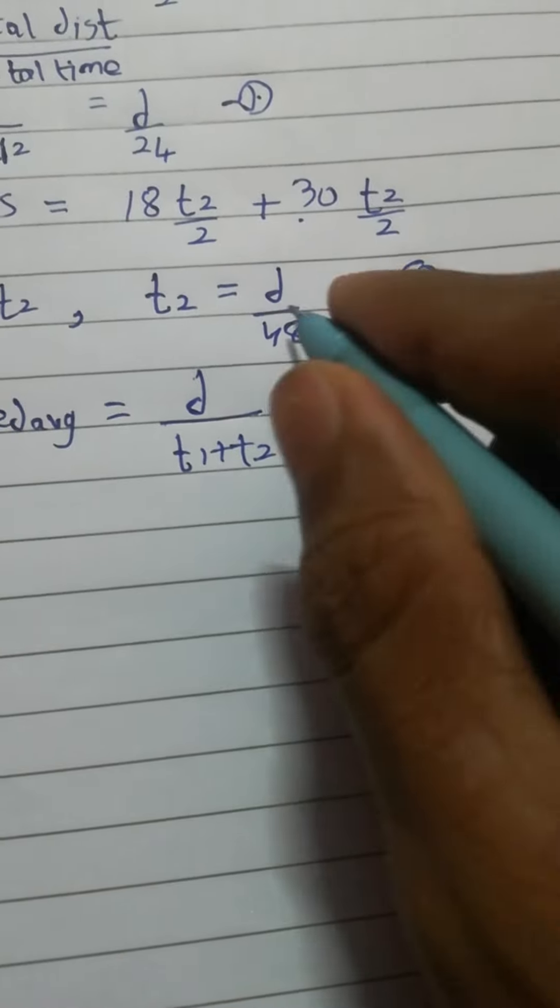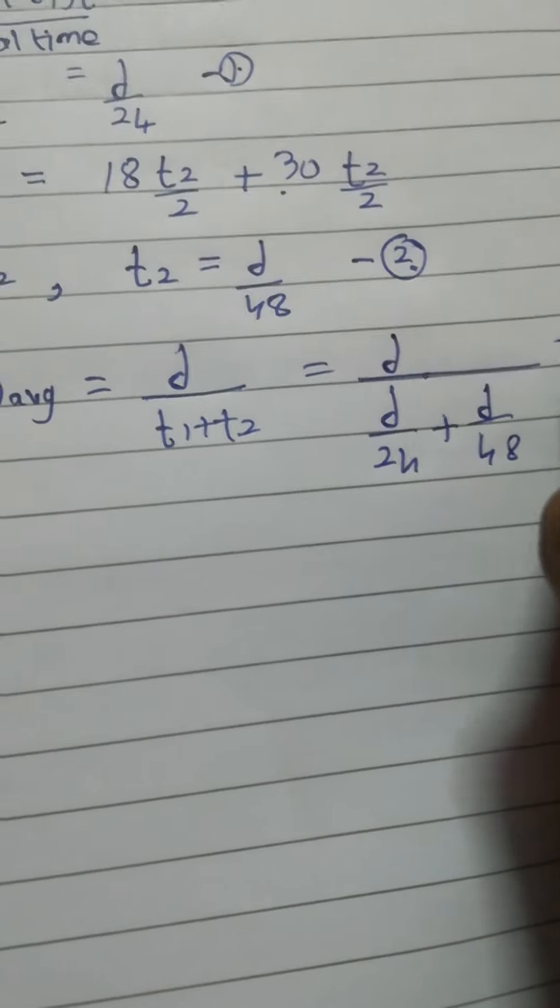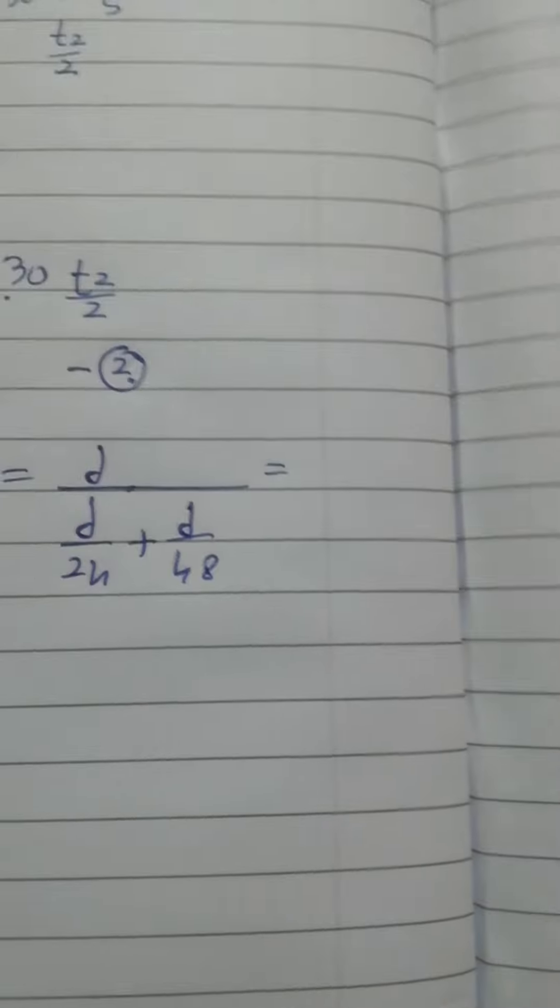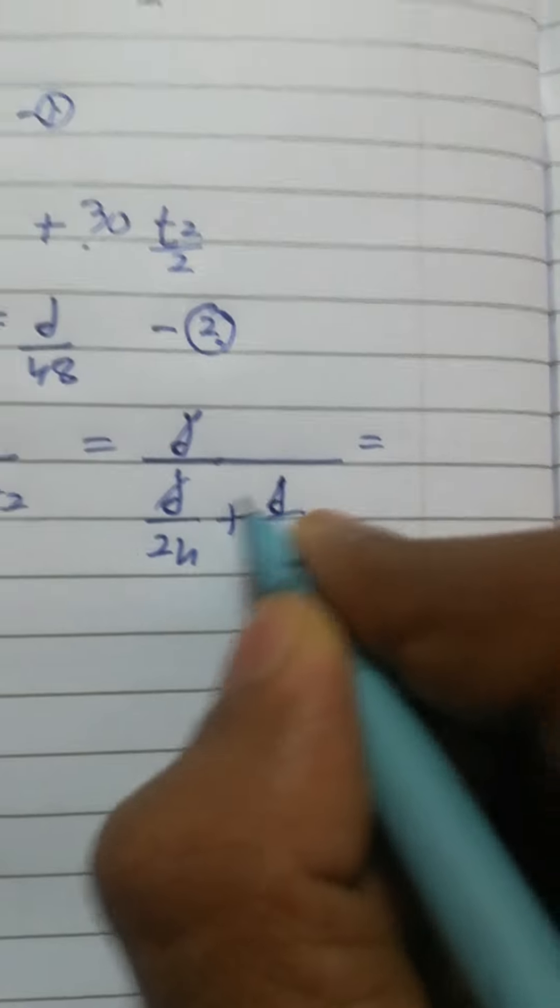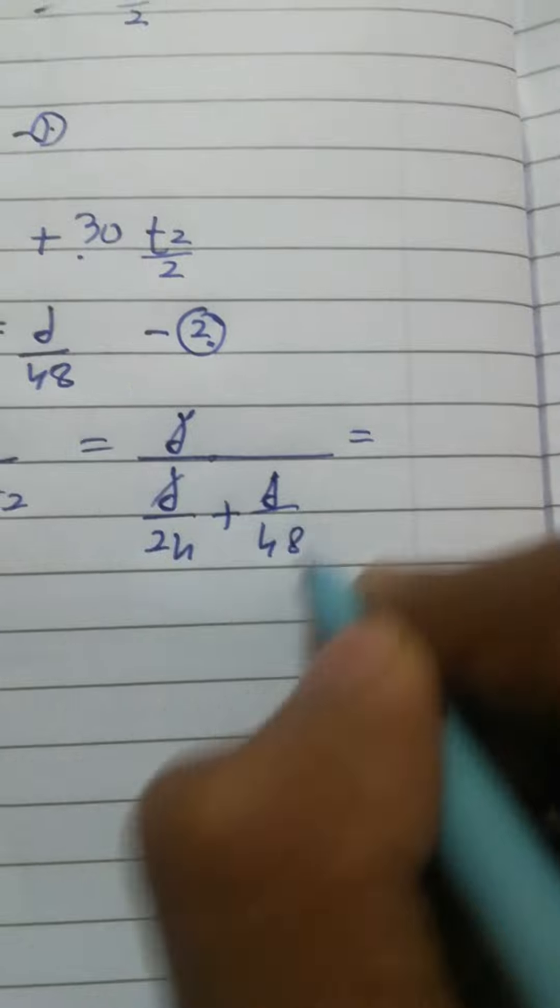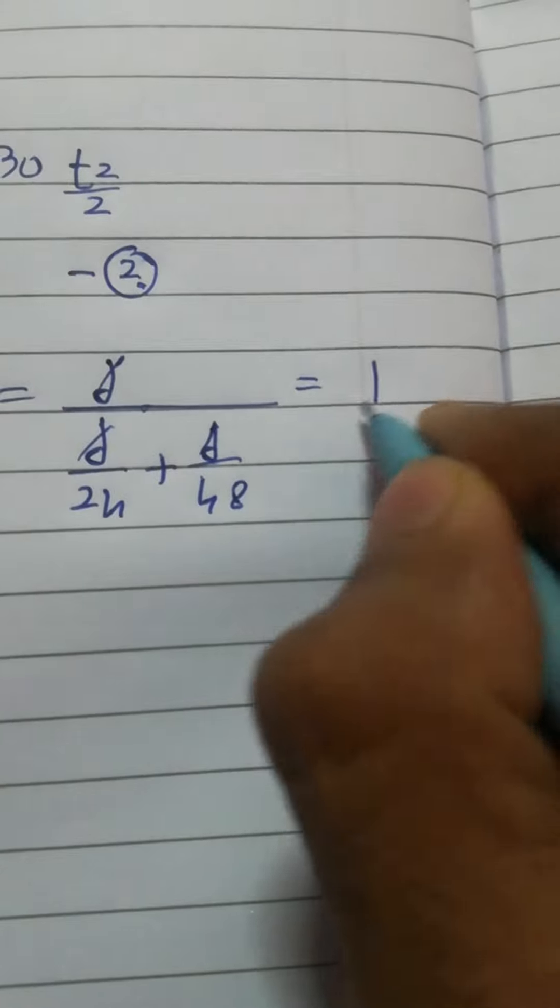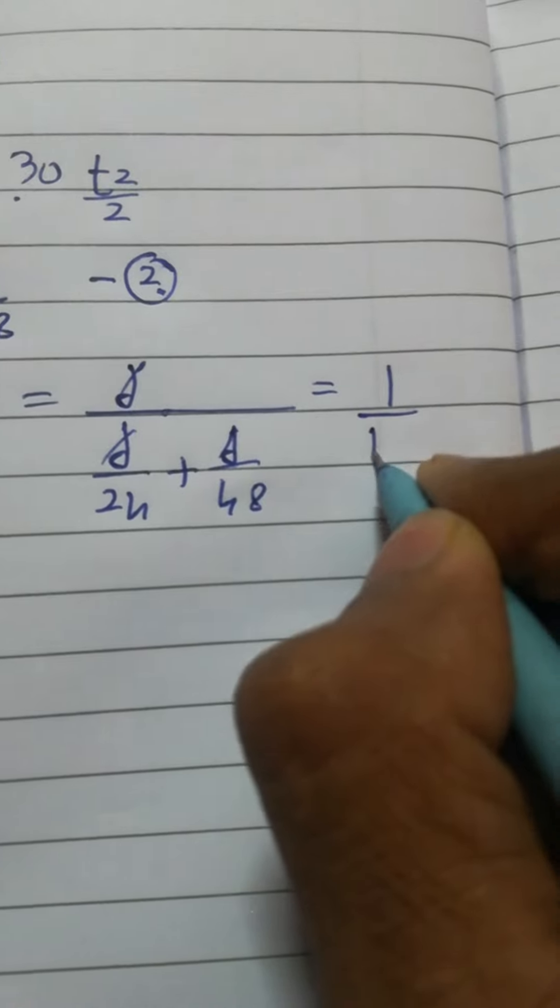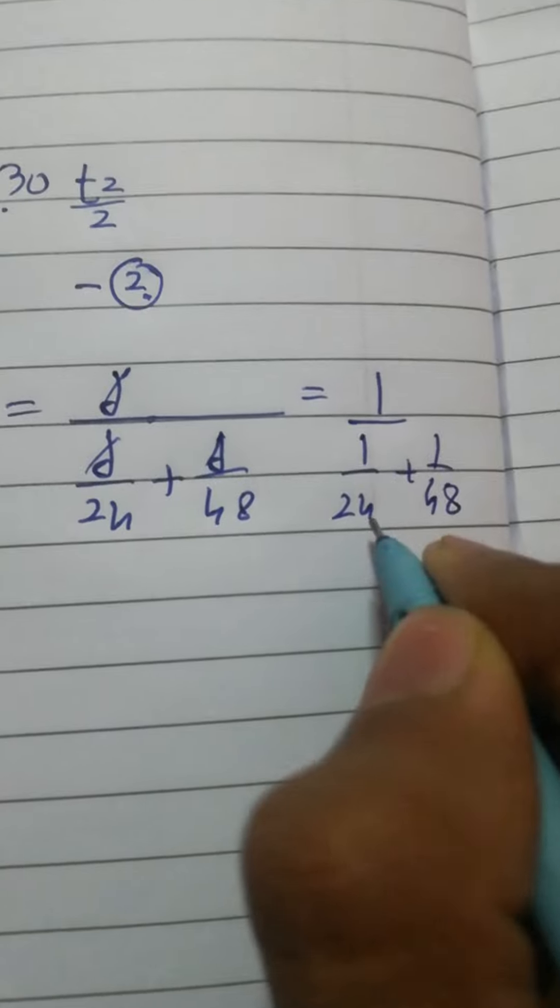So this one would be - now you can cancel D here. If you remove D common from here, then it would be outside and D by D would be 1. So this is 1 by 1 by 24 plus 1 by 48.